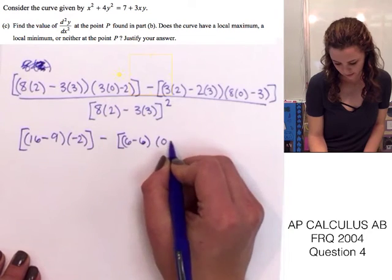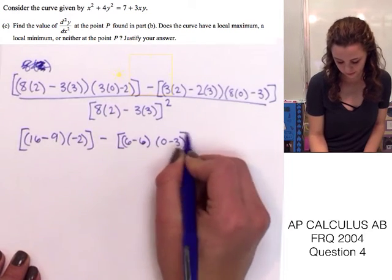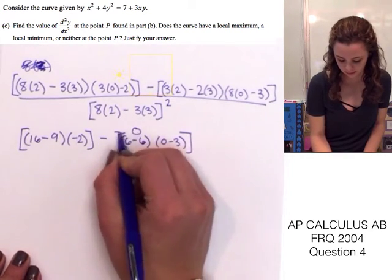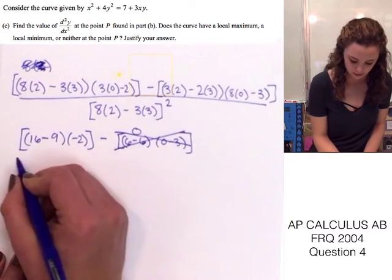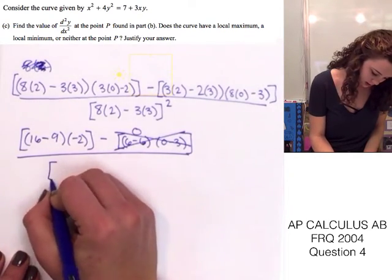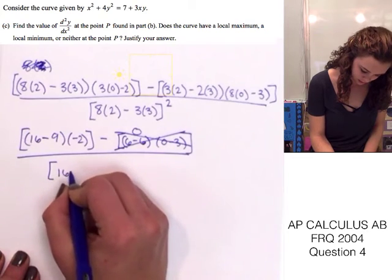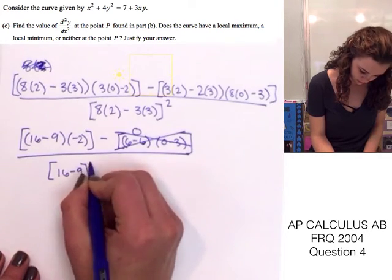So, this whole part, since this is 0, this whole part ends up being cancelled out. So we'll just skip a step right there. And the bottom part ends up being 16 minus 9 squared.